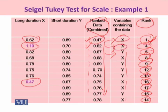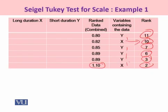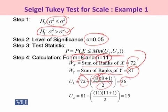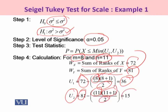The sum of ranks for x: adding ranks 1 + 4 + 8 + 16 + 17 + 14 + 10 + 2 gives a value of 72. Similarly, the sum of ranks under y is 81. Now, using Wx and Wy to calculate u1 and u2: u1 is calculated as Wx minus m(m+1)/2, where m was the sample size of 8, giving u1 = 36. For u2, we have Wy minus n(n+1)/2, where n was 11 (the total observations for the second sample), giving u2 = 15.